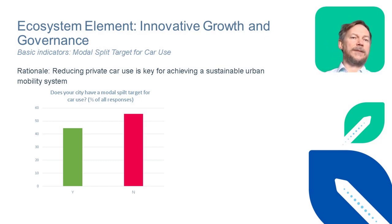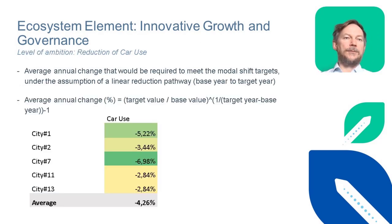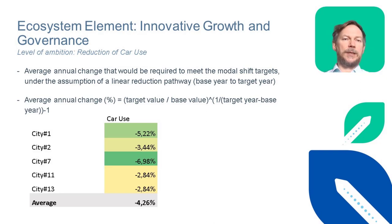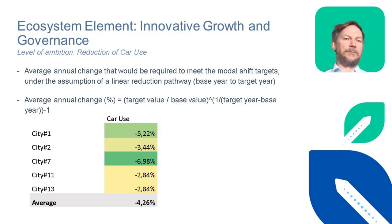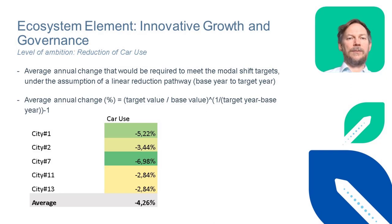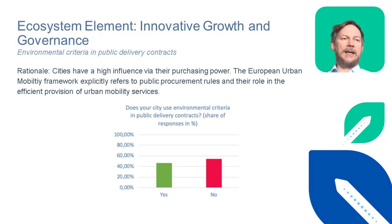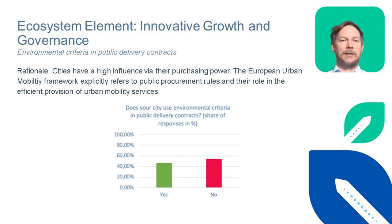We found that less than half of the cities have targets for reducing car use. The tracker qualifies this data using the required annual change rate to achieve the target. For example, a city could pledge to achieve a car share of 30% in 2030, down from 40% in 2018. We calculated the required annual change assuming a linear reduction. All answers went towards reducing car use, with a range between 7% and 2.8% for the less ambitious cities and an average of 4.3%. We also asked whether cities use purchasing power to influence urban mobility, such as implementing environmental criteria in public delivery contracts — roughly half did so.